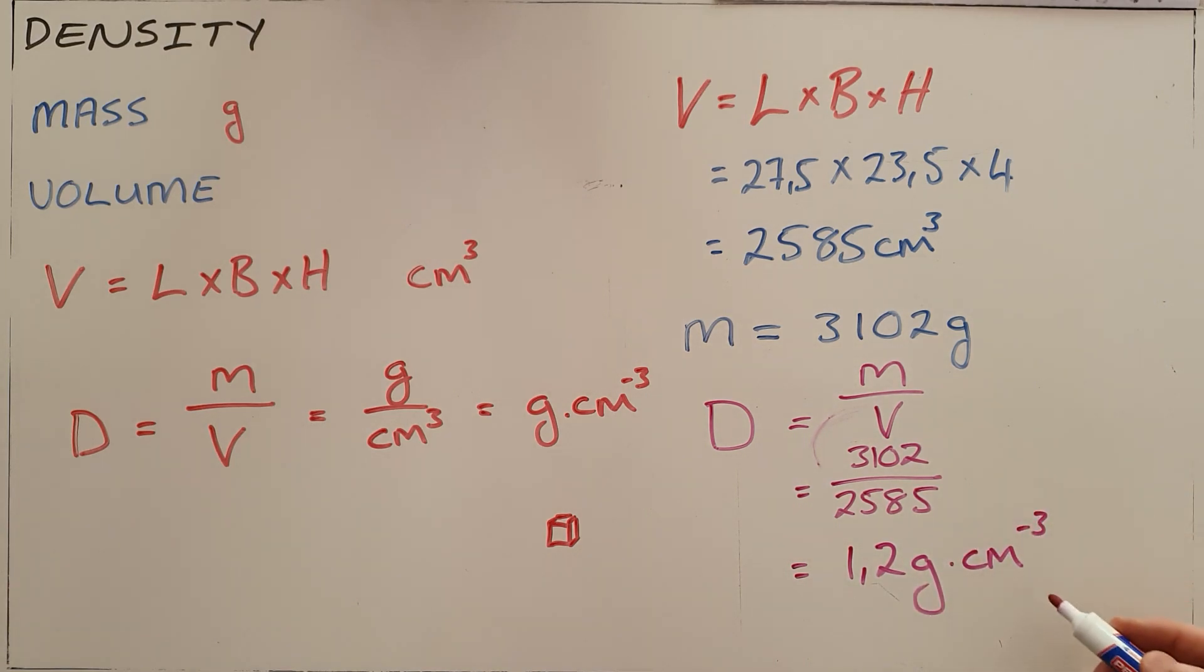What that tells us is that every cubic centimeter in this book has a mass of 1.2 grams. This makes sense because it is a solid and everything is very closely packed—the particles are close together, which makes it more dense than something like water, which has a density very close to 1 gram per cubic centimeter.